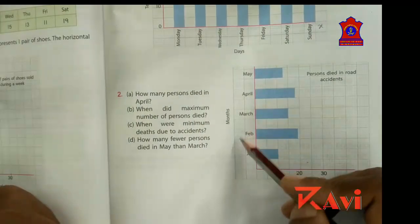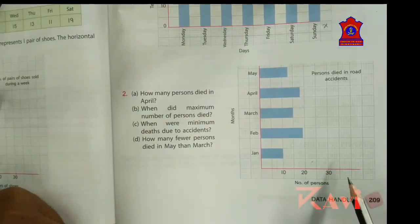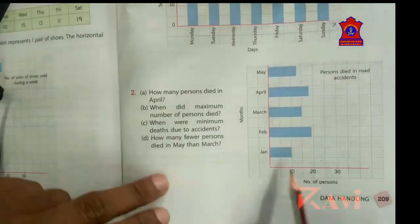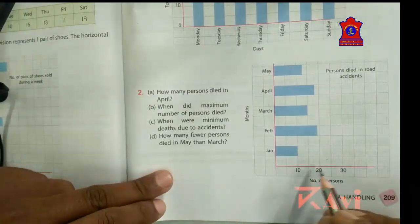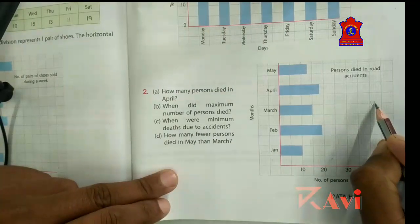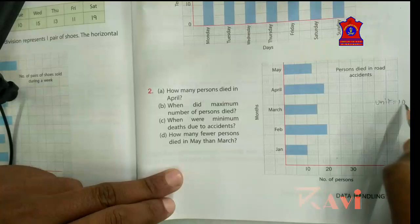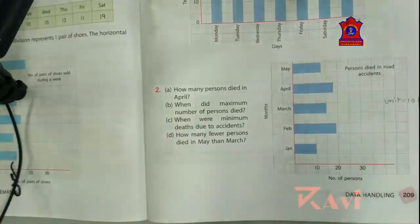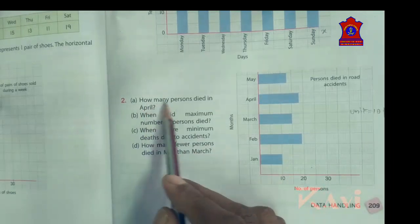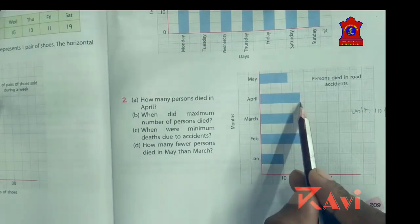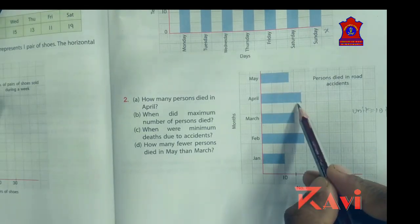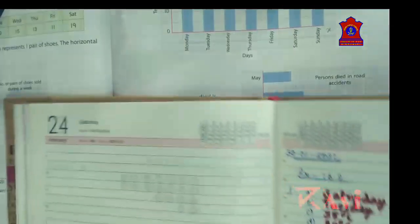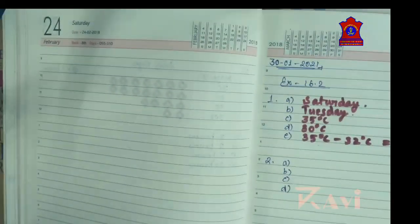Question two is showing number of persons and months — different months are given and number of persons died in road accidents. The first question: how many persons died in April? The unit is showing 10 persons per division. April — counting the small units — 16, 17, 18 — so 18 persons died in April.